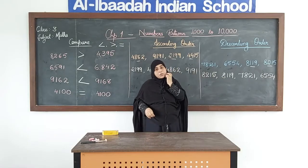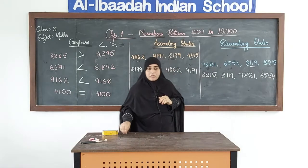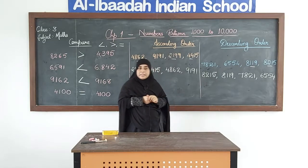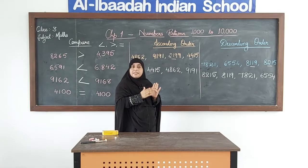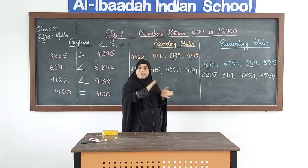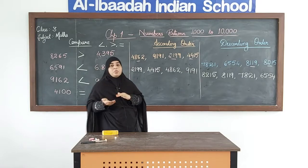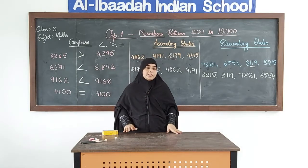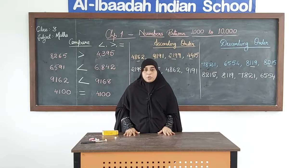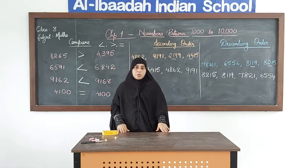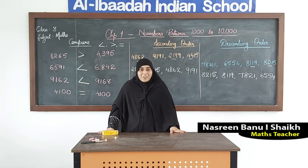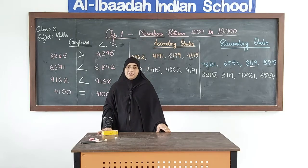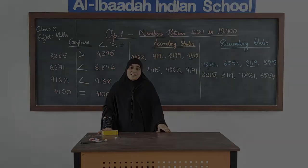I hope you have understood how we compare 4-digit numbers. We always start comparing from the greatest place, which is the thousands place. If the thousands place is the same, we move to hundreds place, and so on to tens place. Keep practicing at home so that you do not forget the concepts. Take care of yourself and inshallah we will meet again soon with our new video. Jazakallah khairah.